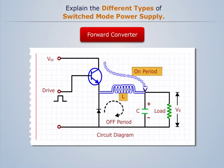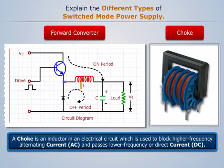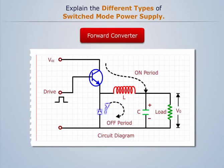A choke is an inductor in an electrical circuit which is used to block higher frequency alternating current and passes lower frequency or direct current. And the diode carries current during the off period of the transistor. The chokes also store energy during the on period and pass some energy to the output load.